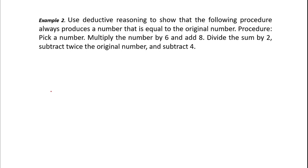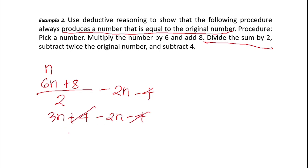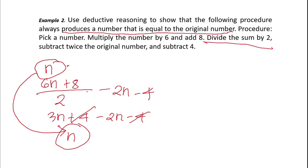Example number 2: use deductive reasoning to show that the following procedure always produces a number equal to the original number. Pick a number n, multiply by 6, add 4, divide by 2, subtract twice the original number, then subtract 4. Working it out: this gives 3n + 4 − 2n − 4, which simplifies to n. Therefore the procedure produces a number equal to the original number n.